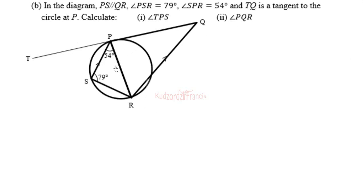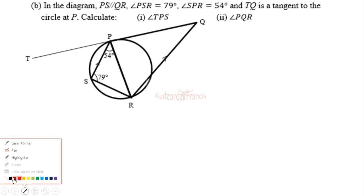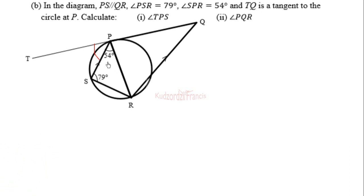We want to calculate angle TPS. In circle theorems, we need to use the alternate segment theorem. The angle TPS and the angle SPR are congruent — they are equal — because angles in alternate segments are equal. So if we can find angle SPR, then we have found angle TPS.